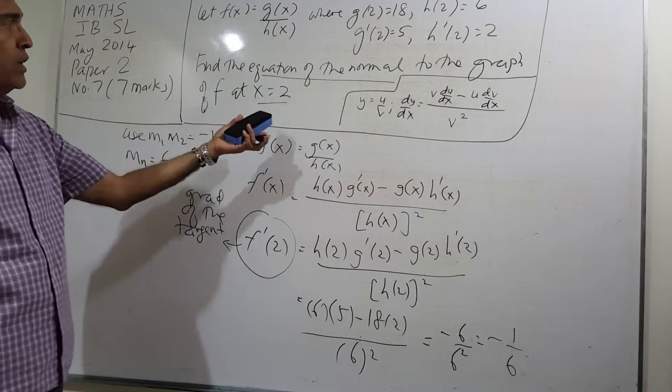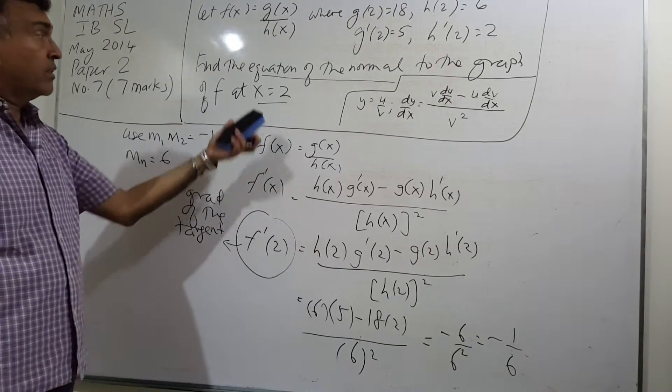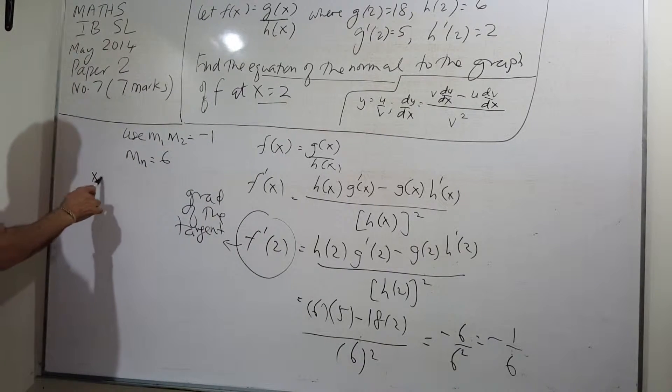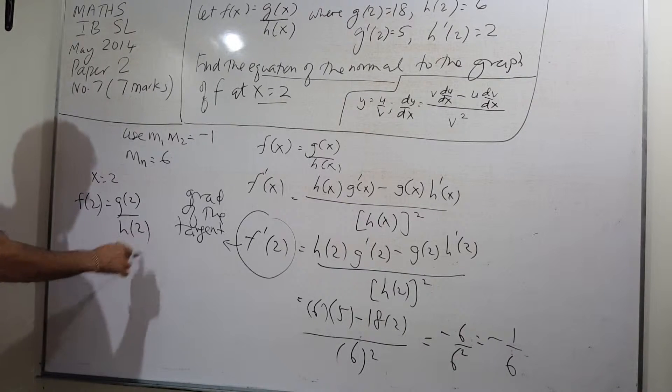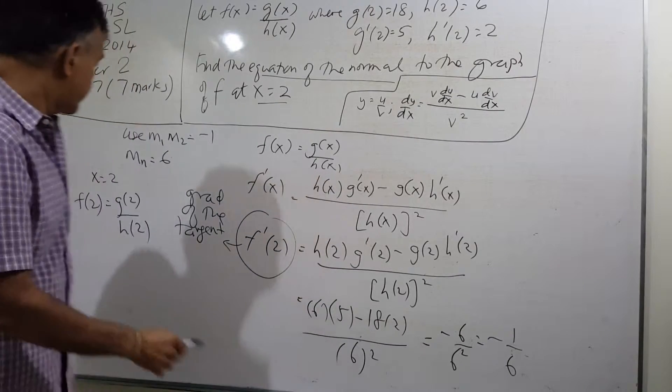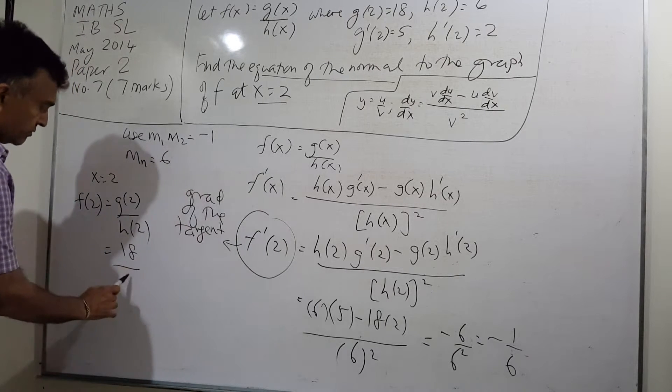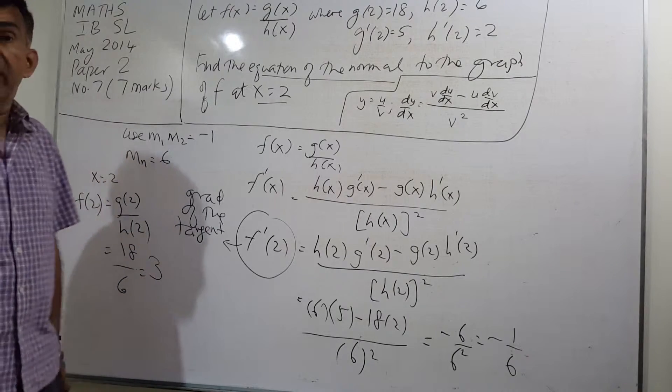Now we know the gradient of the normal. We're going to write the equation of the normal. The point I know because I know x equals 2 at that point. I need to work out the value of y. I know x equals 2. f of 2 will be g of 2 over h of 2. What is g of 2? 18. What is h of 2? 6. So I have the y value at that point is 3.